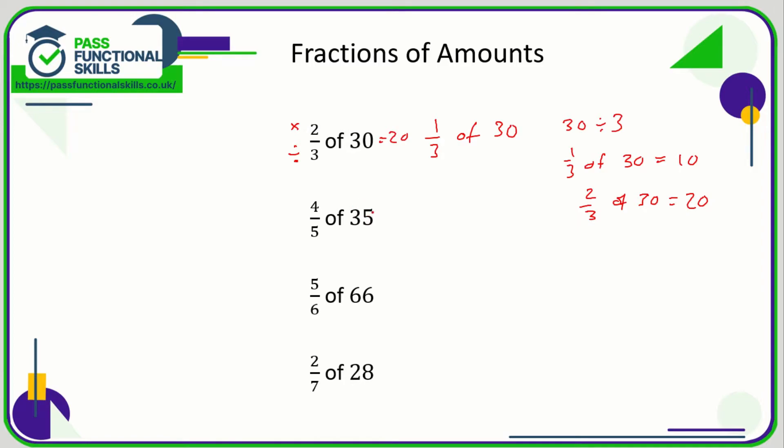4/5 of 35: 35 divided by 5 is 7, 7 multiplied by 4 is 28. So basically what we're doing when we're dividing by 5 is we're working out what 1/5 is, and then we're multiplying that by 4 to work out what 4/5 is.